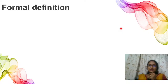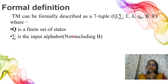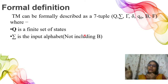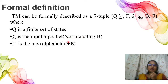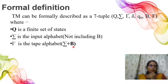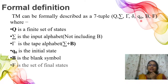A Turing Machine can be formally described as a 7-tuple: Q, sigma, gamma, delta, q0, b, f. Q is the set of states. Sigma is the input alphabet. Gamma is the tape alphabet — it includes the input symbols plus the blank symbol, so gamma equals sigma plus b. q0 is the initial state. b is the blank symbol, a special type of symbol. f is the final set of states.